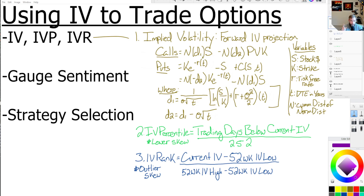What's the difference between the two and which one is better? The difference is in the way they're calculated. In my opinion, it is implied volatility percentile, hands down. Implied volatility percentile simply takes the number of trading days below the current IV and divides it by 252, giving you a scale of how many days were below the current implied volatility over a year. Implied volatility rank is the current IV minus the 52-week IV low, divided by the 52-week IV high minus the 52-week IV low. IV rank exposes you to extreme outlier skew.